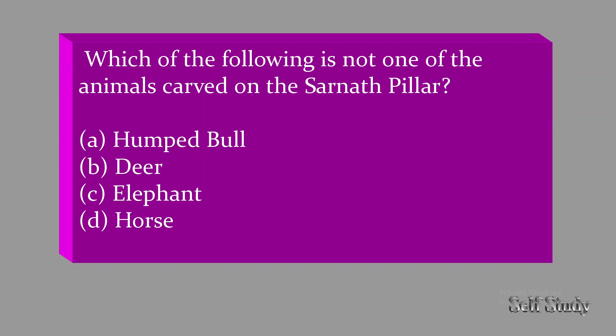Which of the following is not one of the animals carved on the Sarnath pillar? The Sarnath pillar has 4 animals, and the lion is separate. Options are: Hump bull, deer, elephant, and horse. The correct answer is B — deer — deer is not on the Sarnath pillar. Elephant, horse, and hump bull are there. Besides these, what else is there? Do write in the comment section.